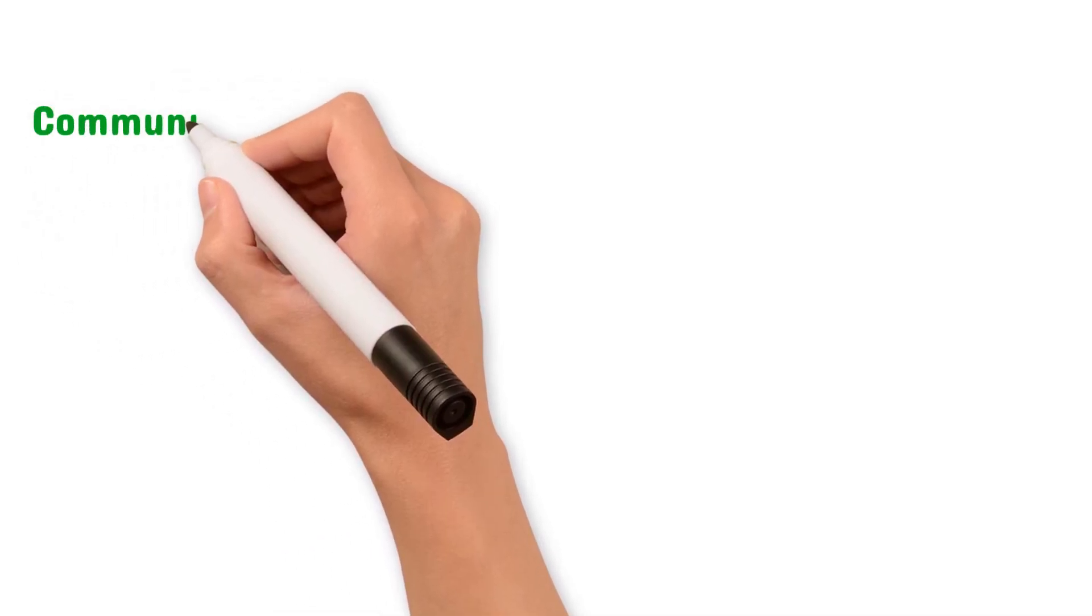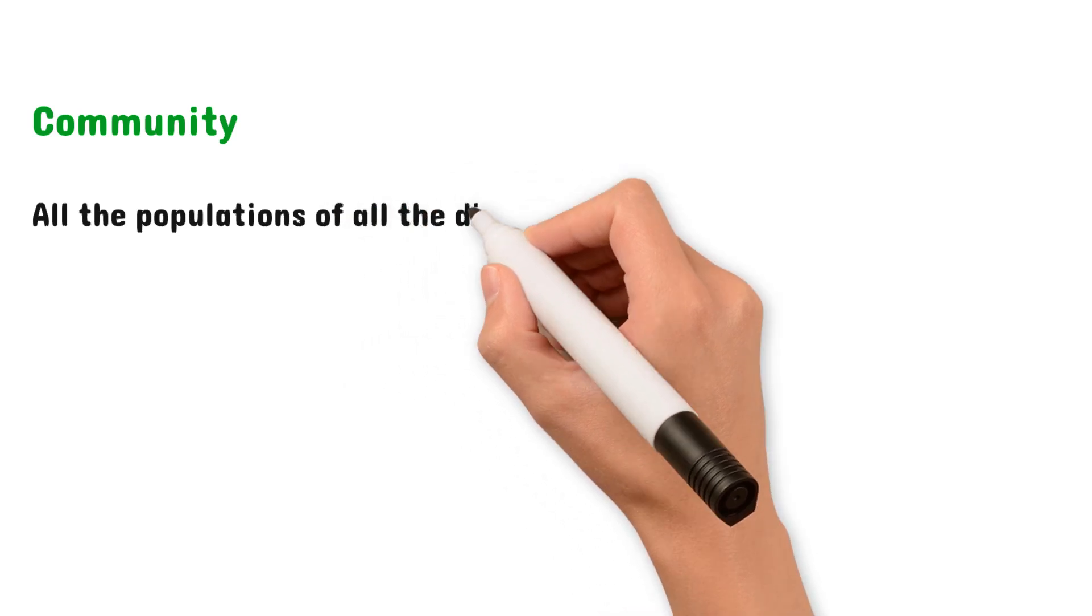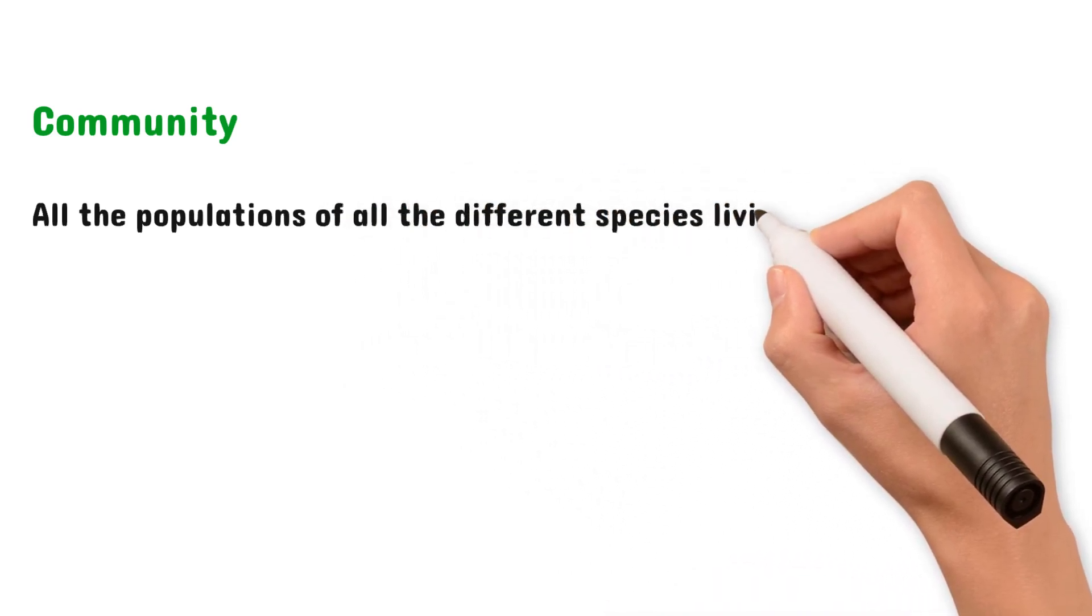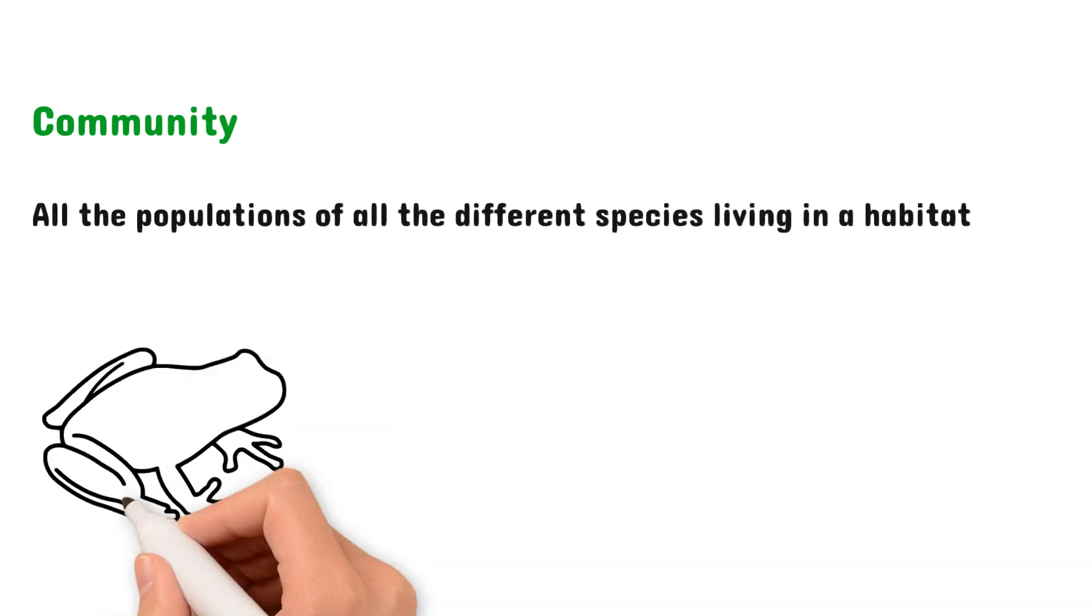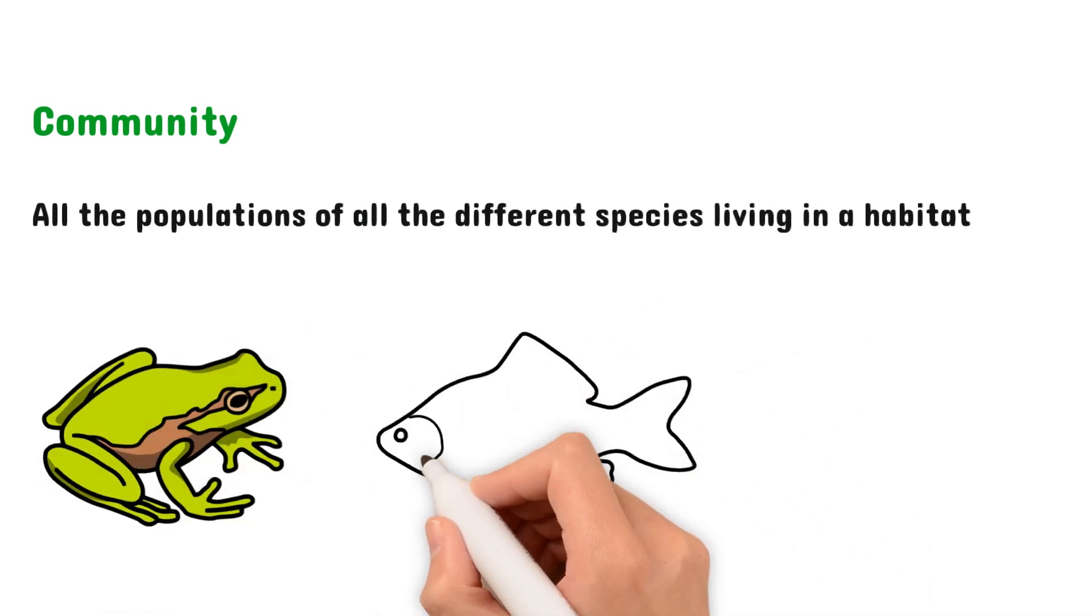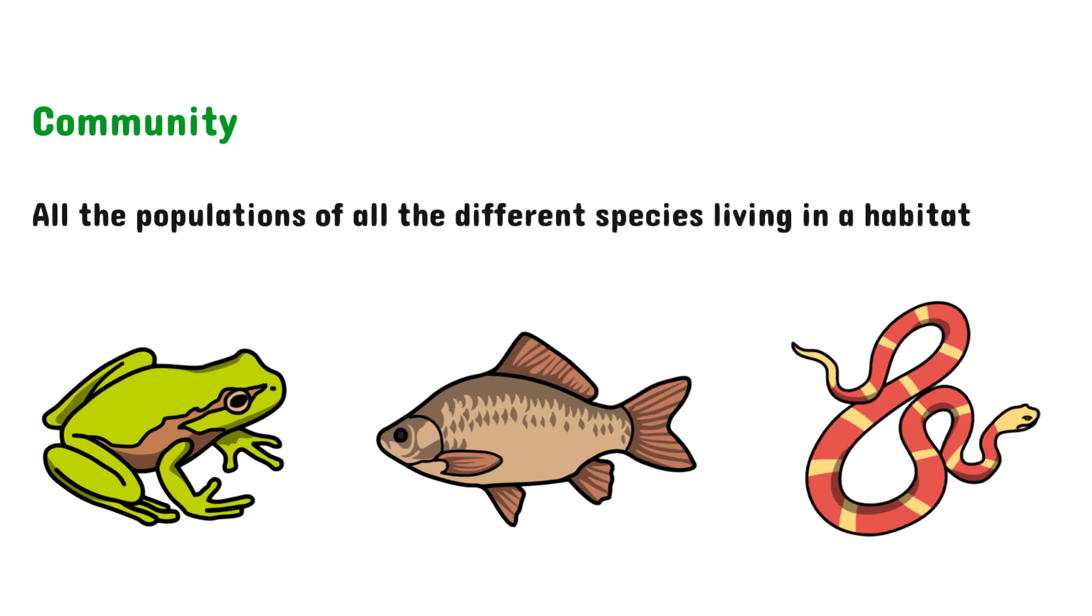Now let's look at the term community. This can be defined as all the populations of all the different species living together in a habitat. So let's take the same lake habitat from before, and we have the population of frogs, the population of fish, the population of aquatic snakes, the population of maybe aquatic plants, and all these populations together make up the community of the lake.